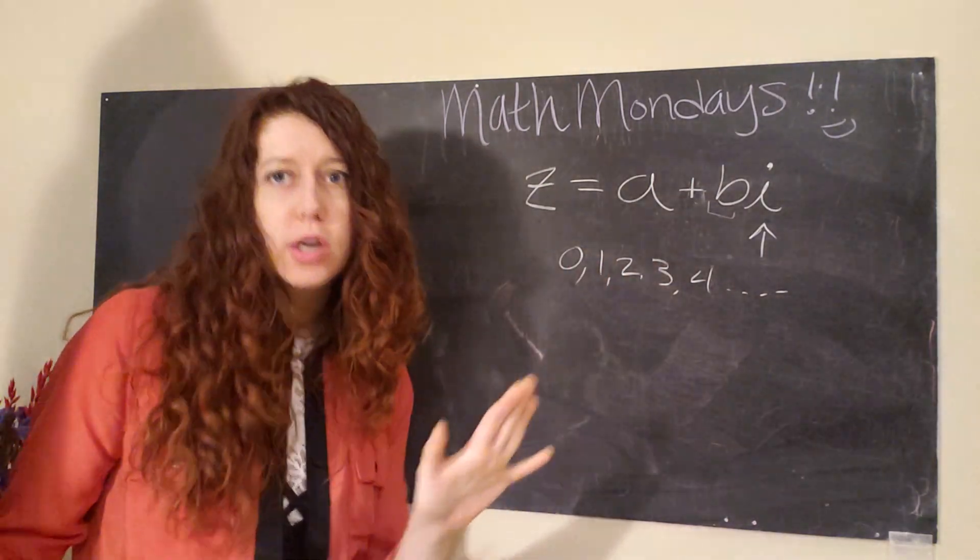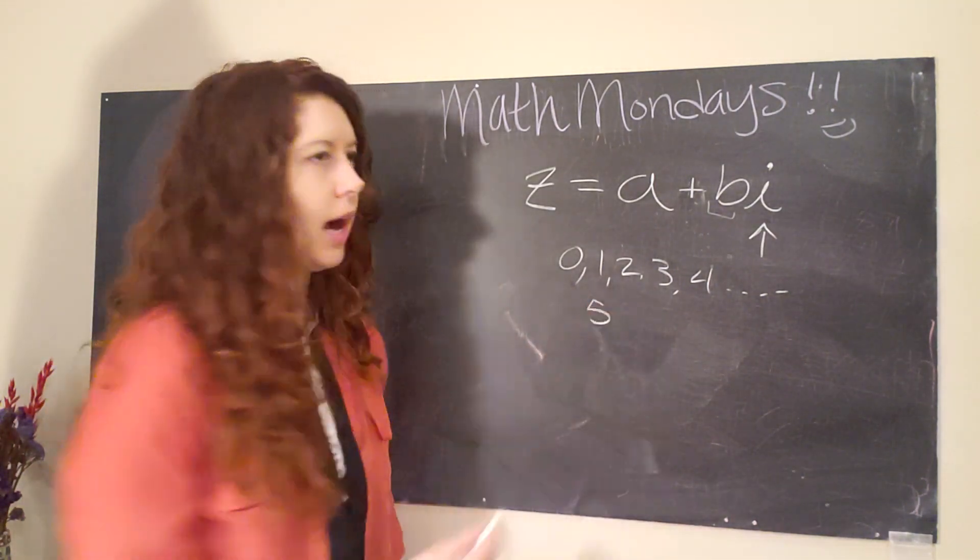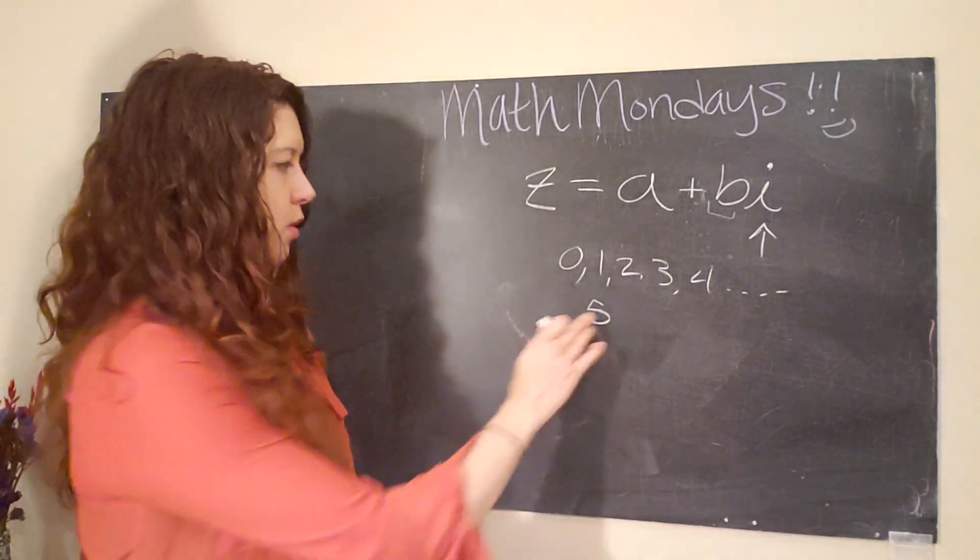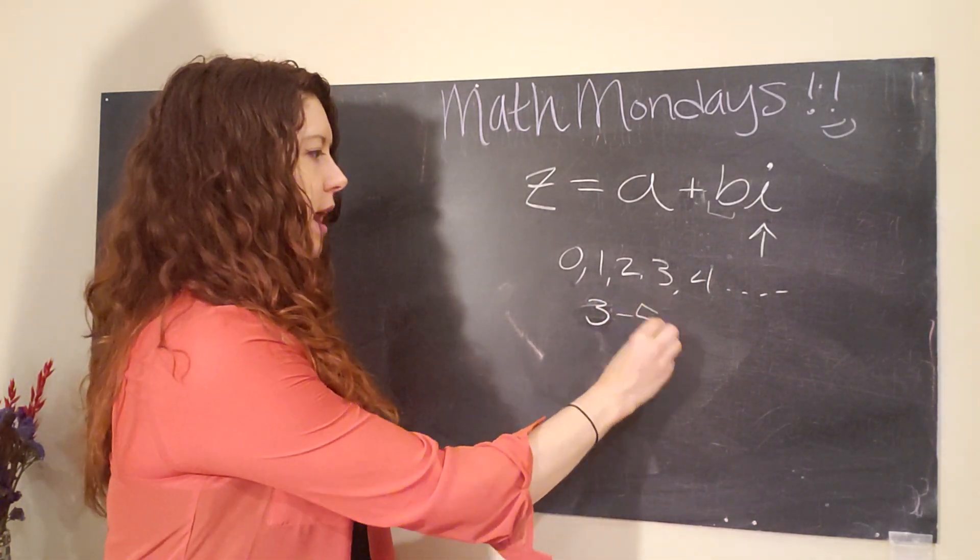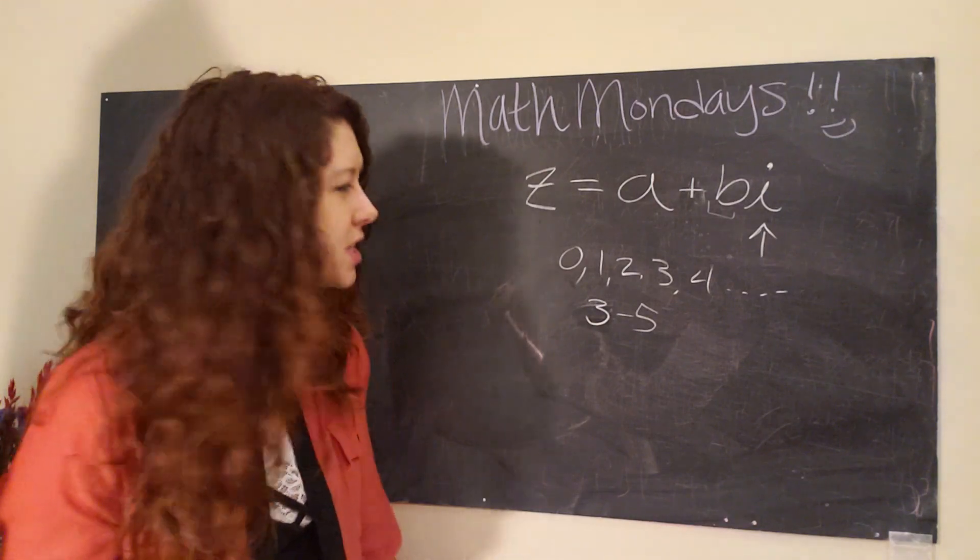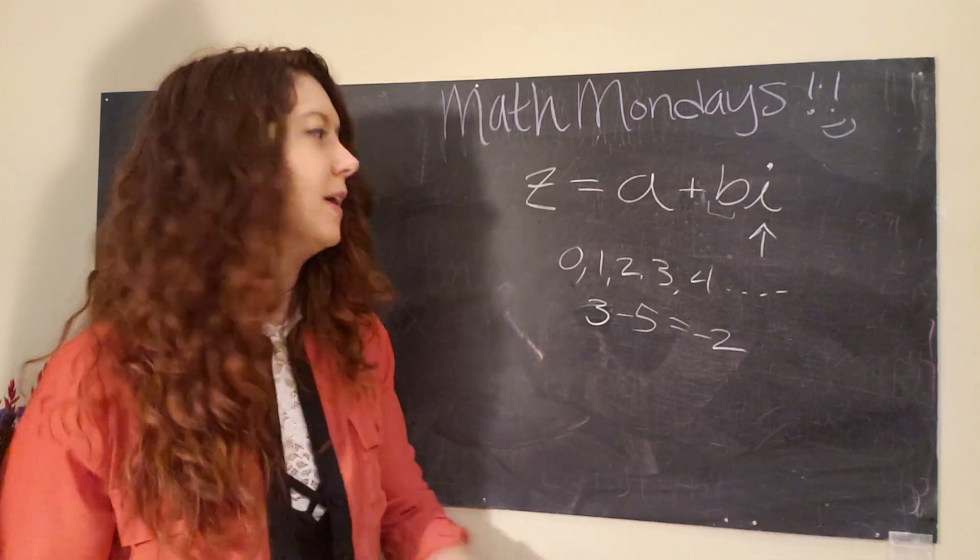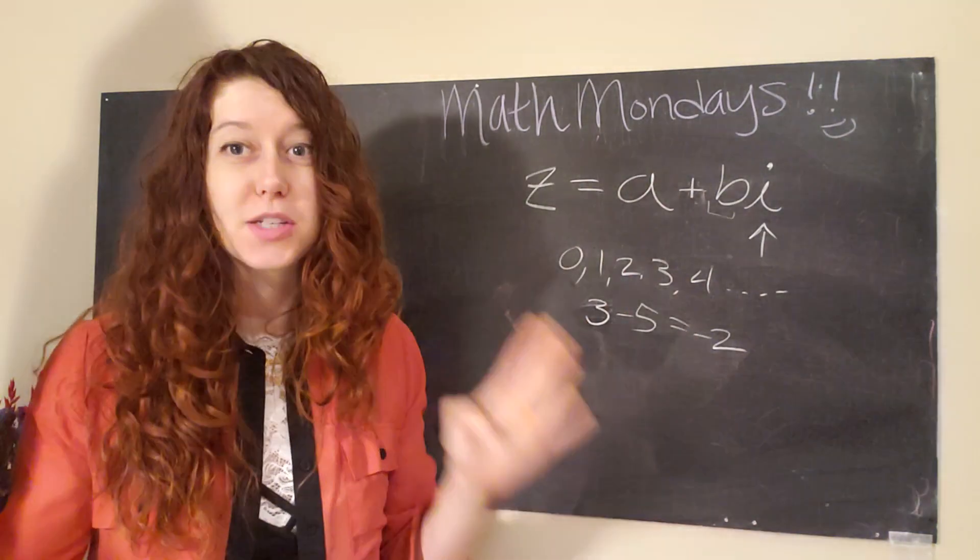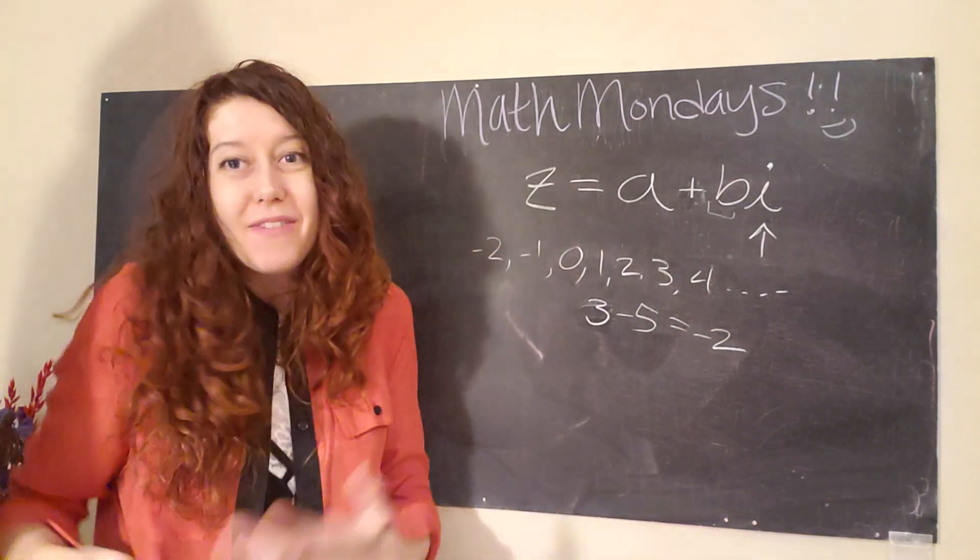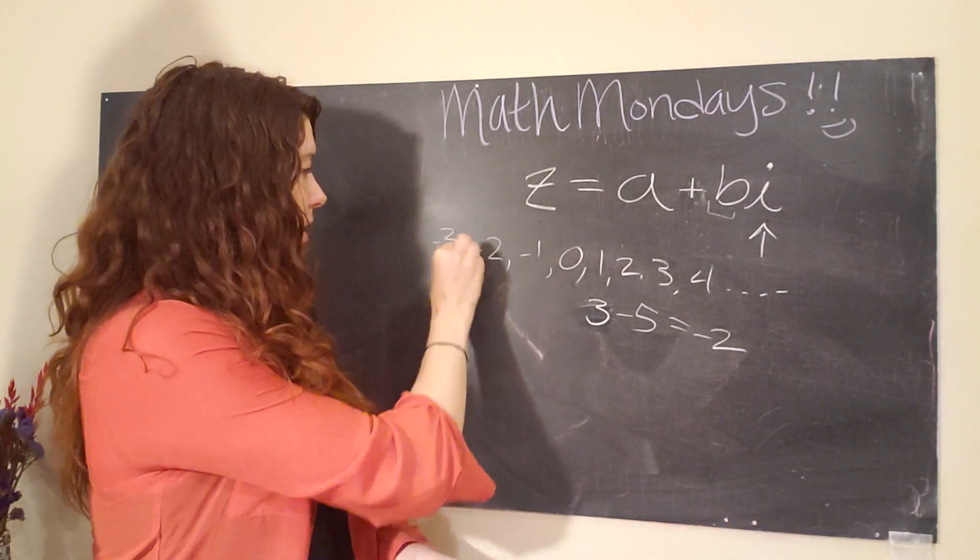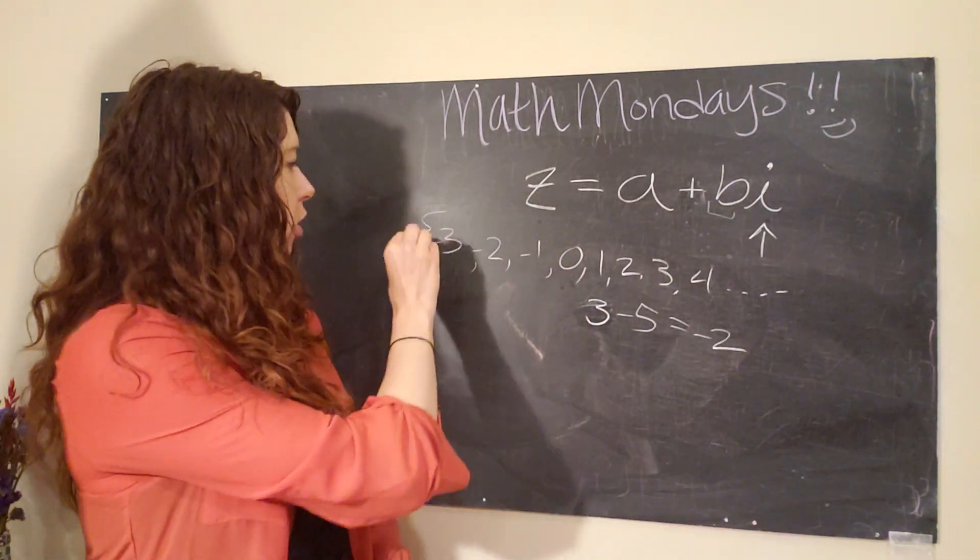And then you can do addition and subtraction and do some interesting things here. But then someone was like, wait, I gave you three apples and you took five. That doesn't make sense because now I have a negative two. But it's okay. All we have to do is recognize that our numbers can go backwards. We can have negative numbers just like we have positive numbers. And so these are called integers.